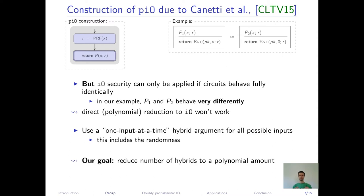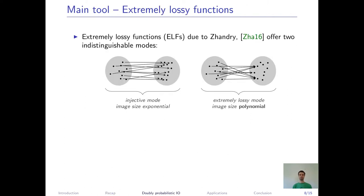Our goal is to use a similar approach, but reduce this number of hybrids to a polynomial amount. Our main tool to achieve this goal are extremely lossy functions, as introduced by Zhandry at Crypto 2016. ELFs are functions that offer two indistinguishable modes. An injective mode, where the pre-image and the image size are both exponential, and an extremely lossy mode, where the image only has polynomial size. This is an extremely strong requirement we have on ELFs, but they can indeed be built based on the exponential DDH assumption, which is, compared to I.O., a very well-studied assumption.